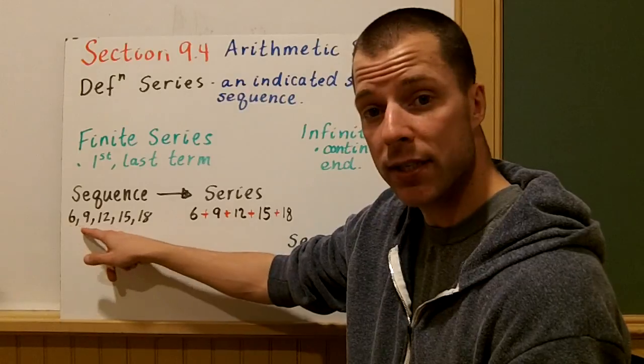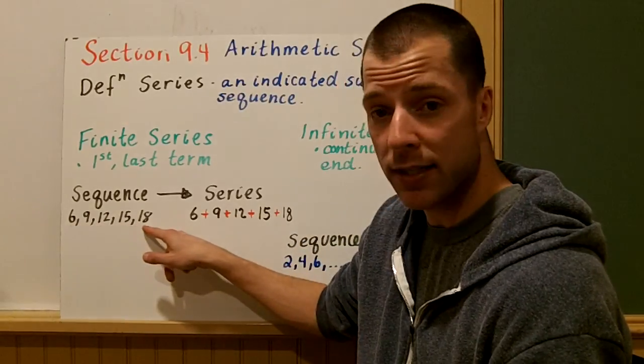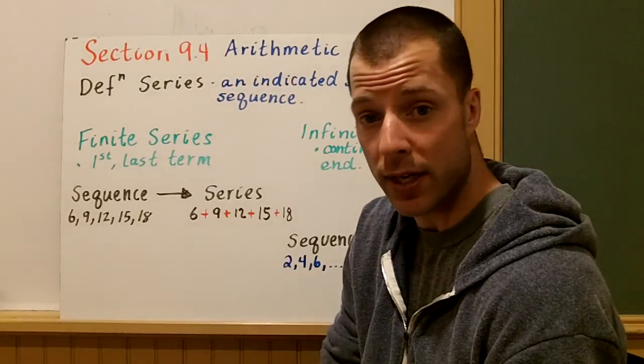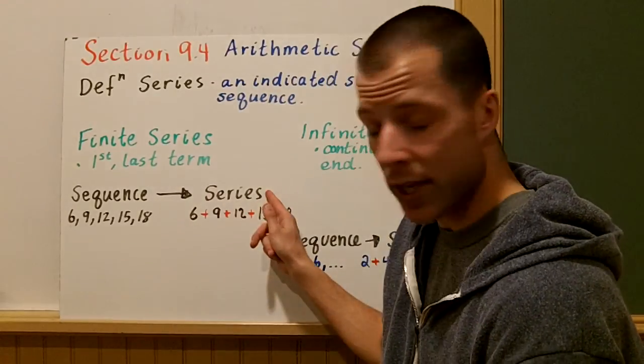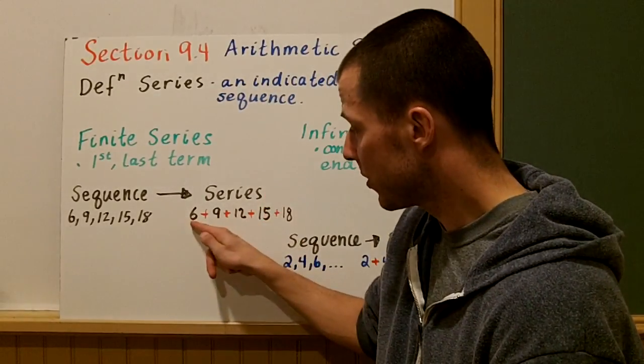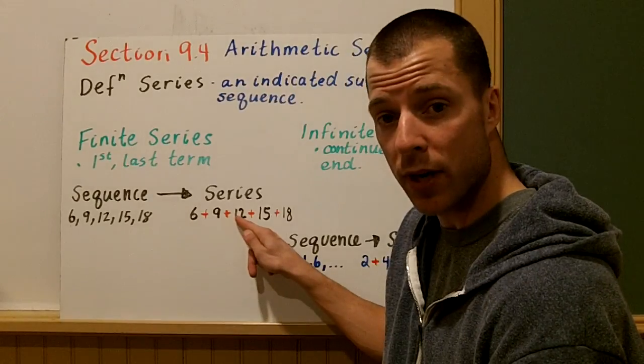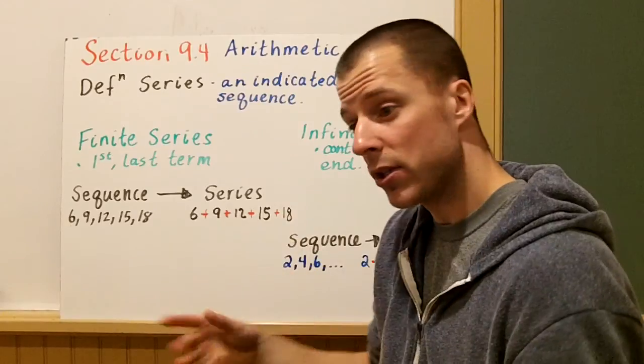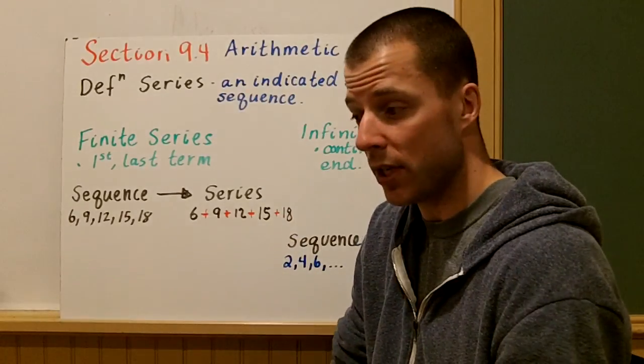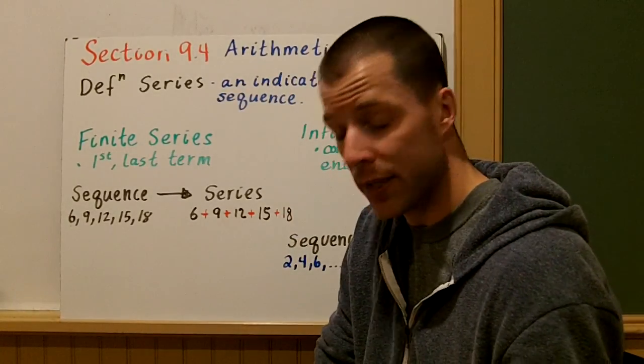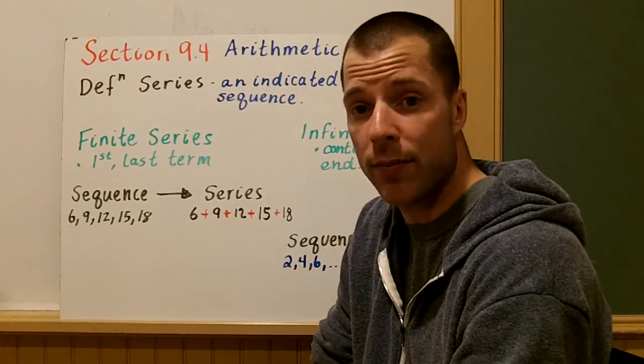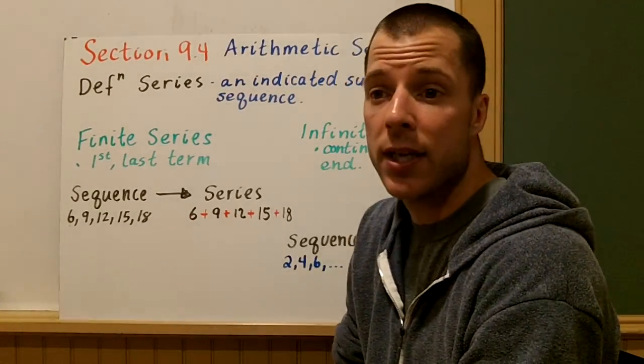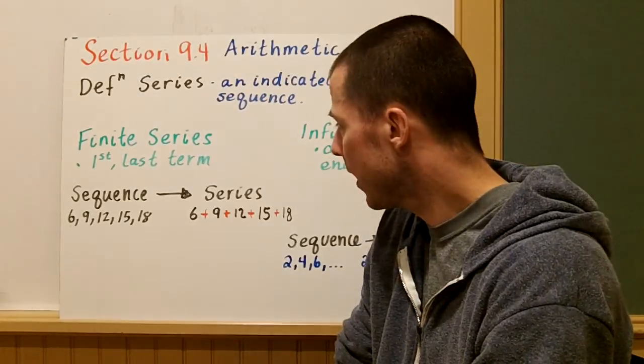We have a sequence of 6, 9, 12, 15, and 18. The common difference here is 3. What that looks like as an arithmetic series is just 6 plus 9 plus 12 plus 15 plus 18. So you could say, well, Mr. Bennett, you just took a sequence and added all the terms together, and that's precisely what I did. That's an arithmetic series. We know it's arithmetic because the common difference is an addition of 3.